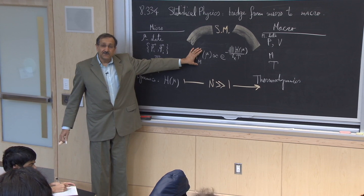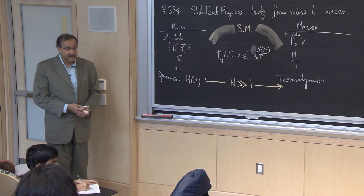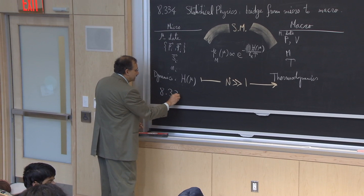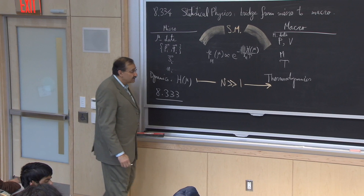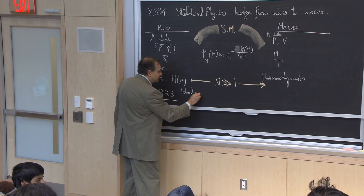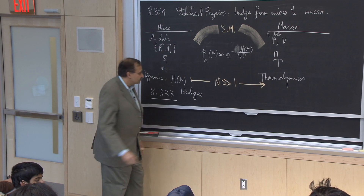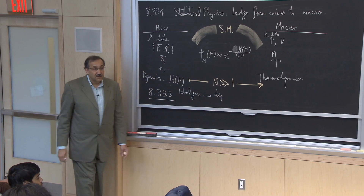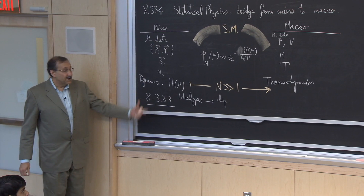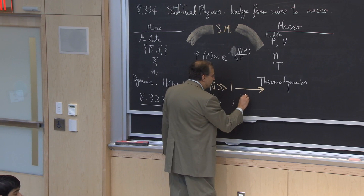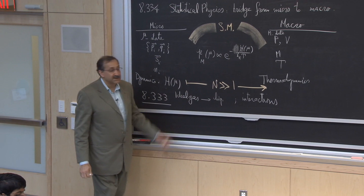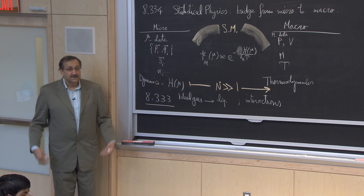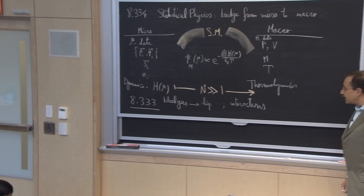When we did this program in 8.333, we looked at very simple systems that were essentially non-interacting, like the ideal gas, or with weak perturbation to get things like liquids. Whereas the program could be carried out precisely with no interactions, in the presence of interactions we encountered new things: transitions from the gas state to the liquid state, and we mentioned solids.